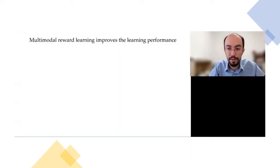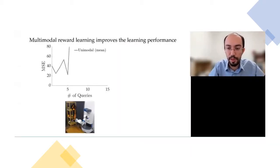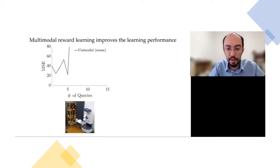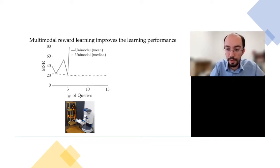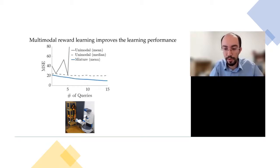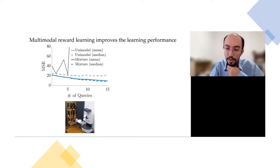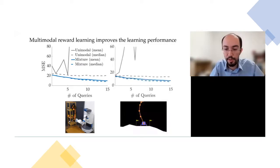In simulation results on this fetch robot task with bimodal data, modeling the reward as a unimodal function failed terribly — there were many outliers because the robot was trying to find one model that explains all data. On the other hand, modeling the reward as a multimodal function using our mixture model gave much better performance, both in terms of mean and median. The results were similar on OpenAI's LunarLander where we again simulated bimodal reward. Richer forms of comparative feedback like scale feedback enable us to learn more general reward functions.